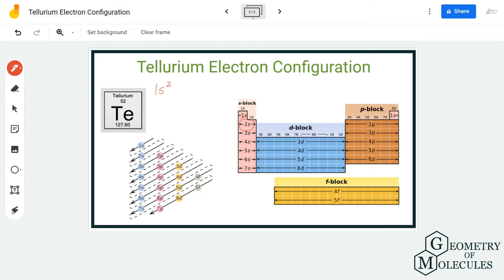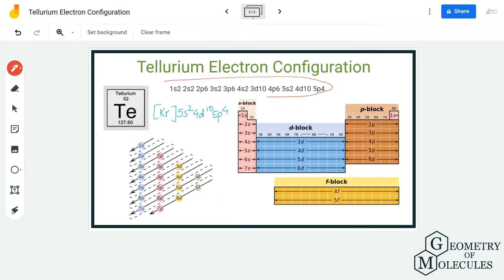The electron configuration of tellurium is 1s2 2s2 2p6 3s2 3p6 4s2 3d10 4p6 5s2 4d10 5p4.